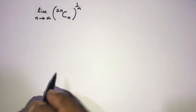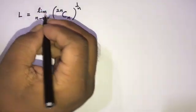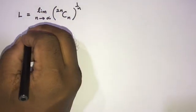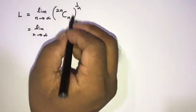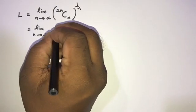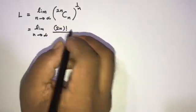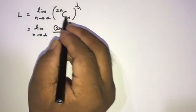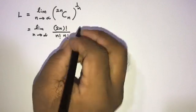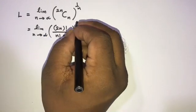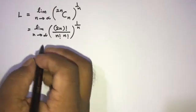Welcome to the mathematics channel. Today we are going to solve another interesting limit question. To start, I am going to take this equal to L, and then we know this is equal to 2 times n factorial over 2n minus n, so n factorial times n factorial, to the power 1 over n.